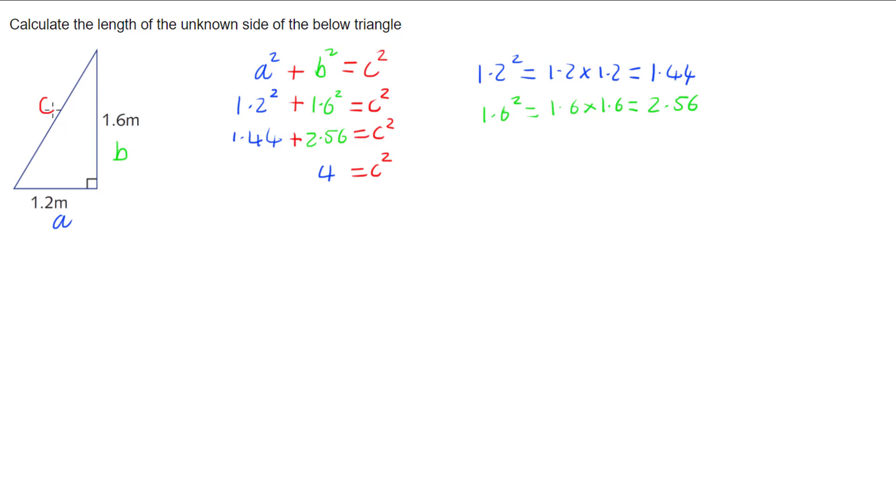Now we want C, not C squared, so what we're going to do is do the opposite of squaring. The opposite of squaring is square rooting, so we're going to take the square root of 4, and that's going to give us C.